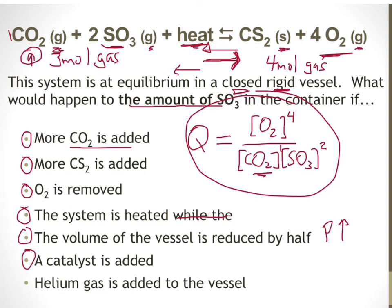If you add a catalyst: catalysts speed up both the forward and reverse reactions by lowering the activation energy. They increase both rates by the same factor, so there is no shift in equilibrium. The amount of SO₃ does not change.